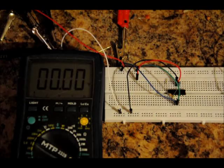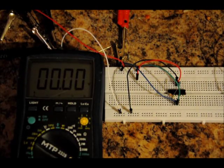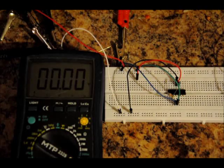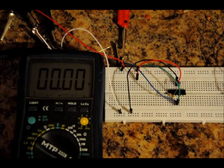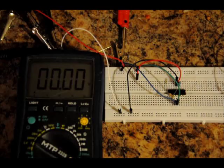Based on my calculation, 5.1k over 1k is 5.1 plus 1 is 6.1. Multiply that by 1.25 volts and you should get 7.625 volts.